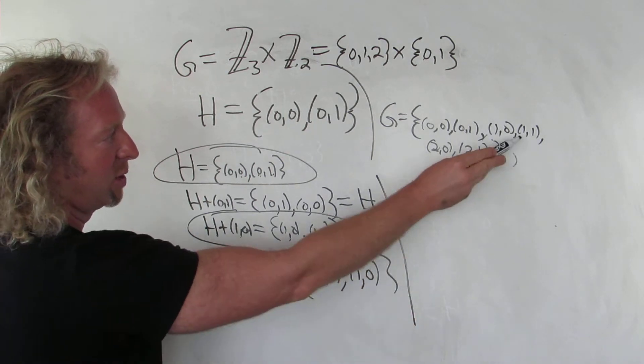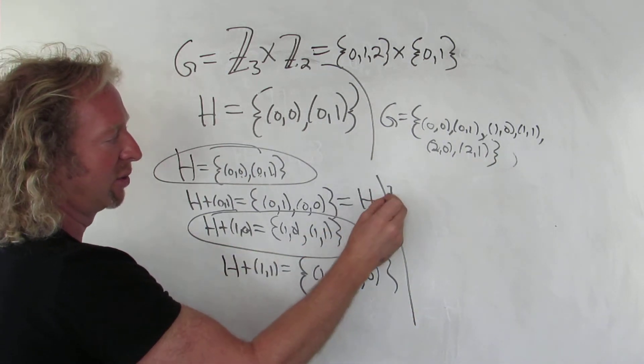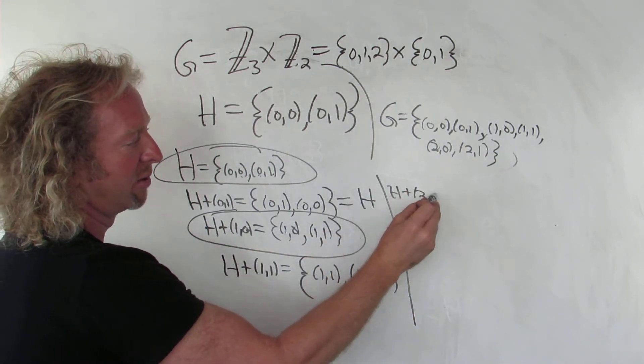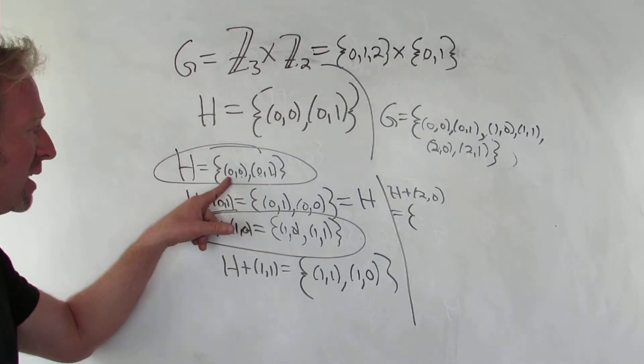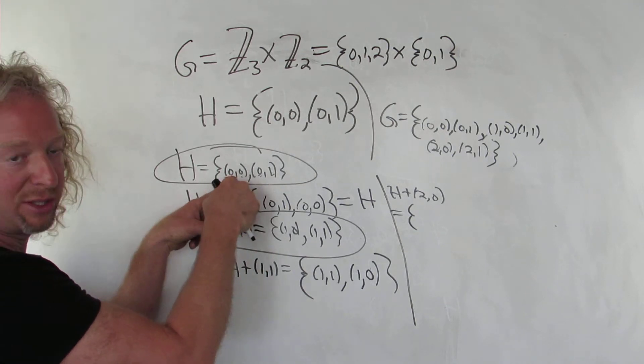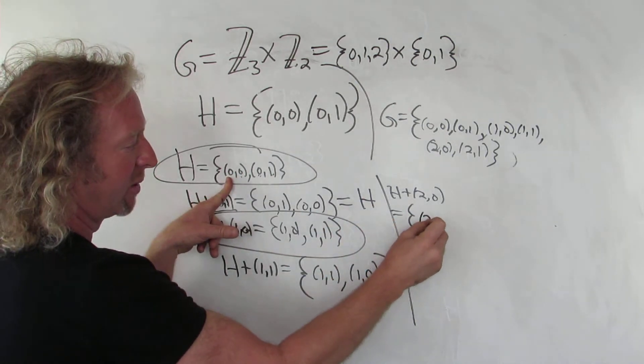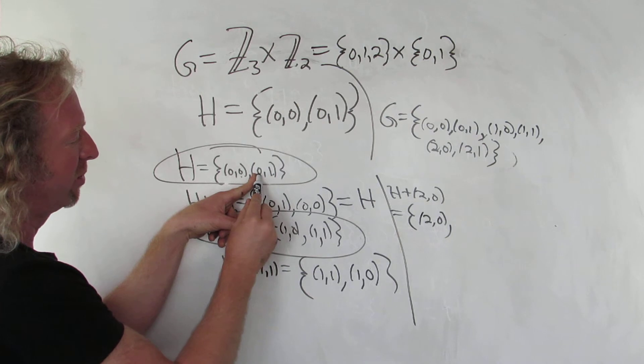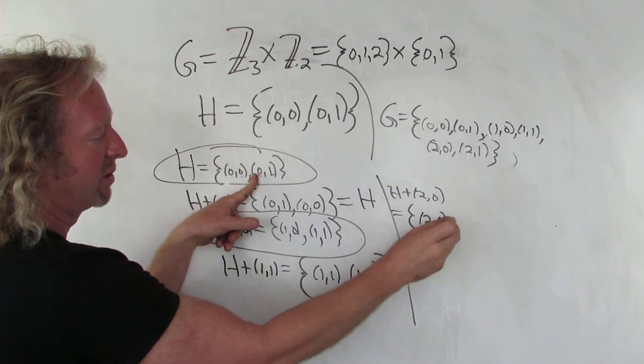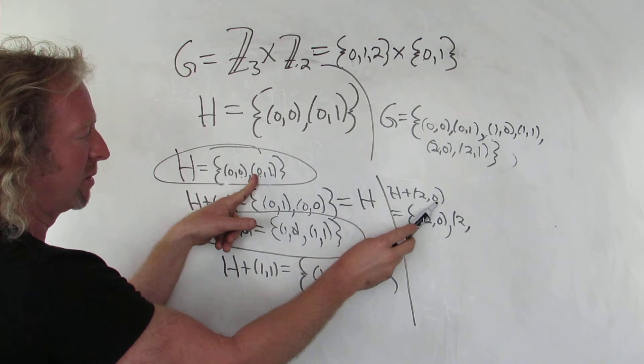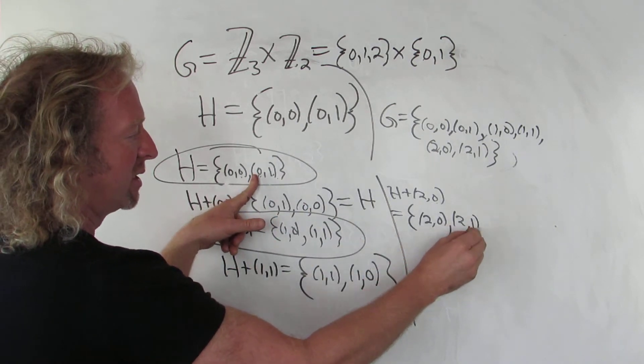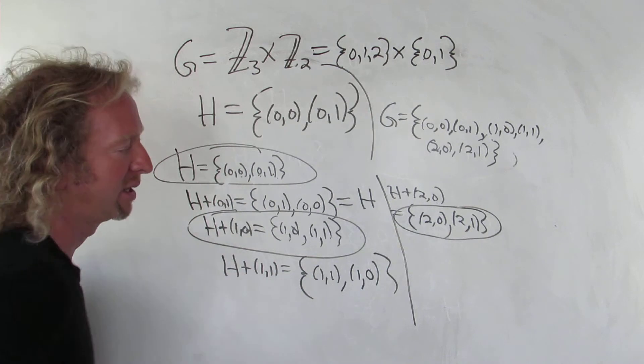Let's do H plus (2,0). And now we're adding the element (2,0) to each of the elements in H. So when we do that, we get (2,0). Right? (0,0) plus (2,0) is simply (2,0). 2 plus 0 is 2, and we're in Z3, so we're good there. And then now we're doing 0 plus 1, so that's 1. So we get a different coset, we get this coset here.